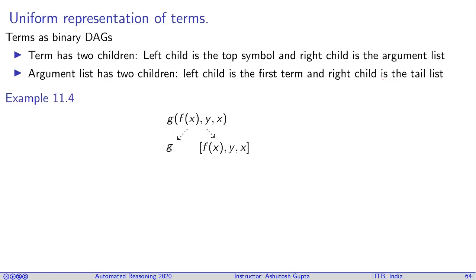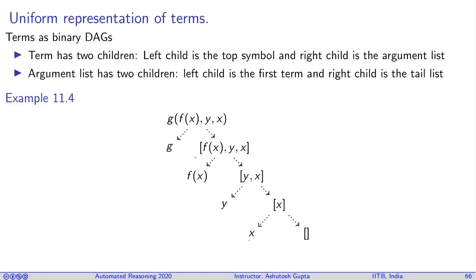If you have a term like this, it has two children: one is g and another is a list. Each list has a right child which is yx, then x, then an empty list. All of them have a left child which is the first term of that particular list — fx, y, and x correspondingly. Then fx is split into f and the parameter x, which is a list that already exists.